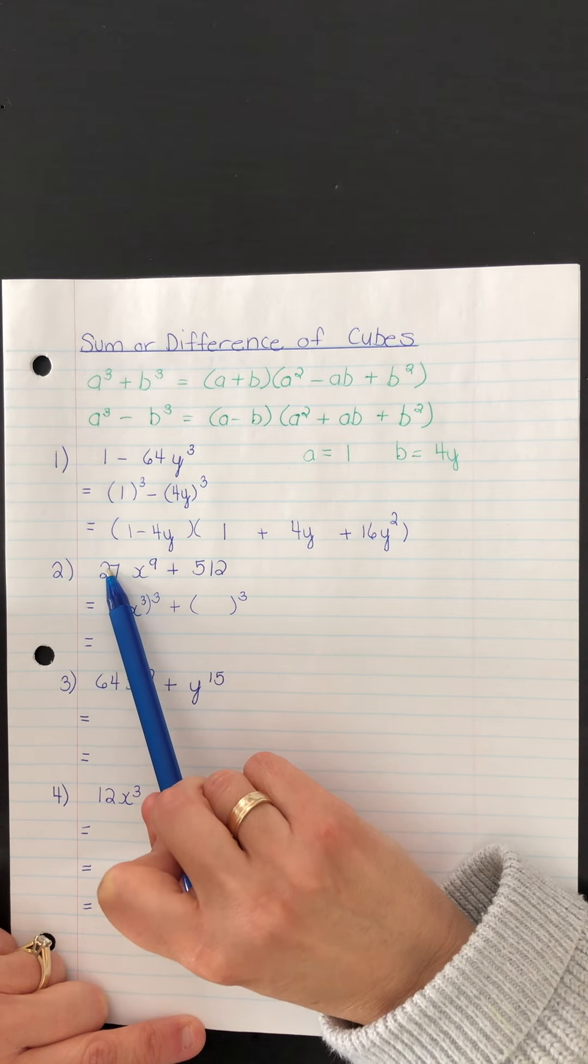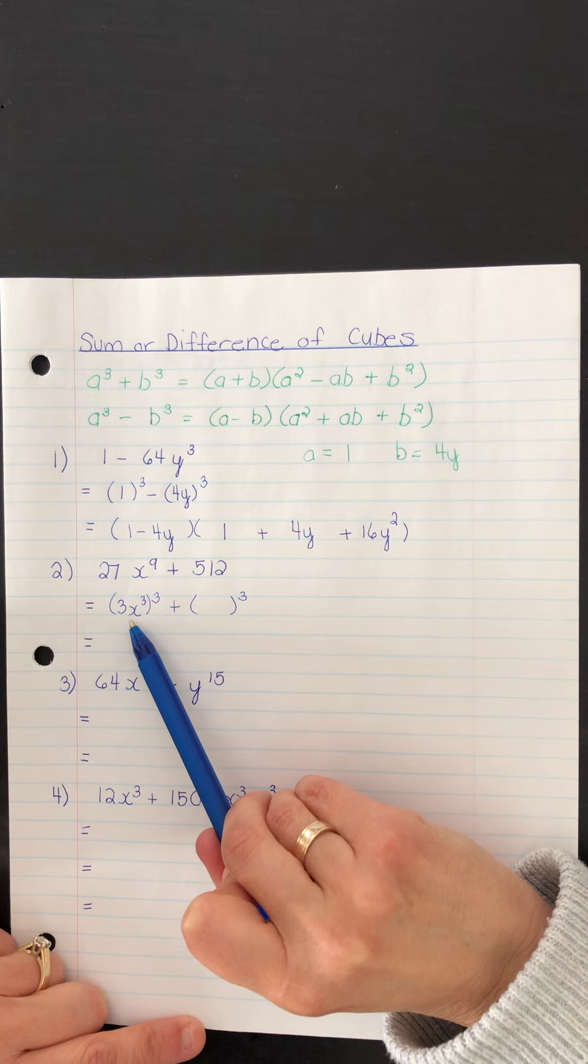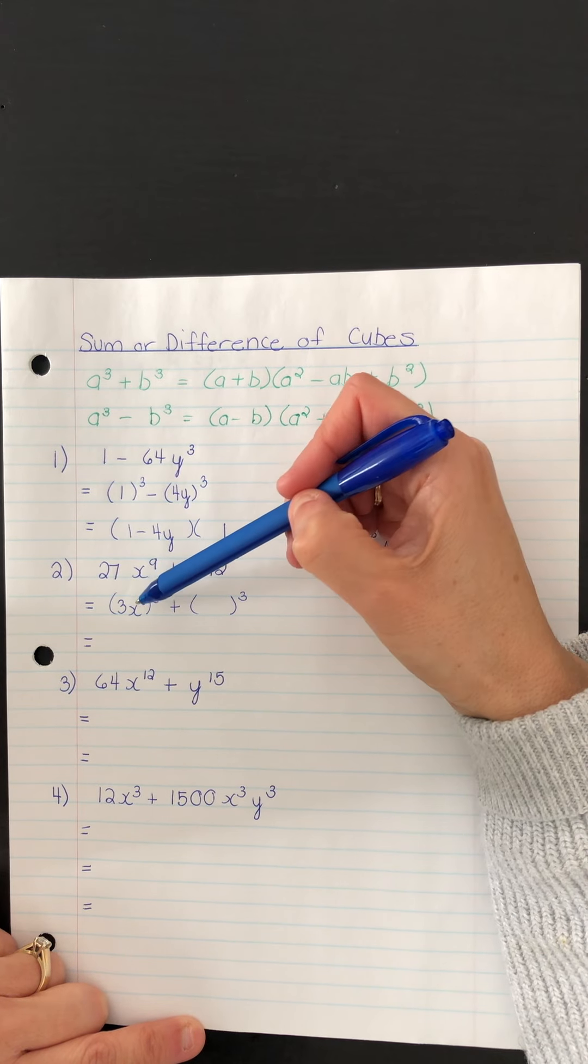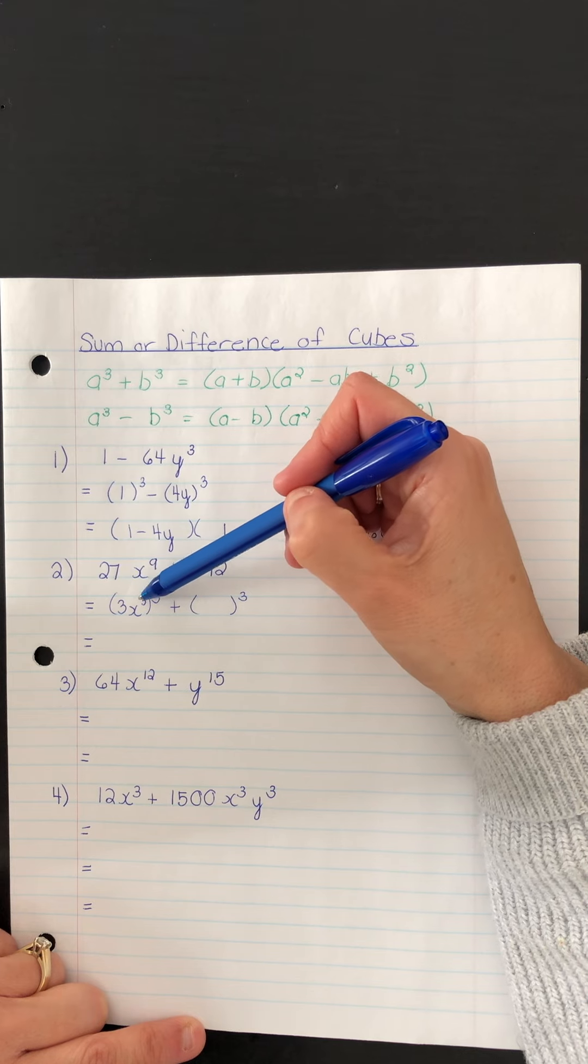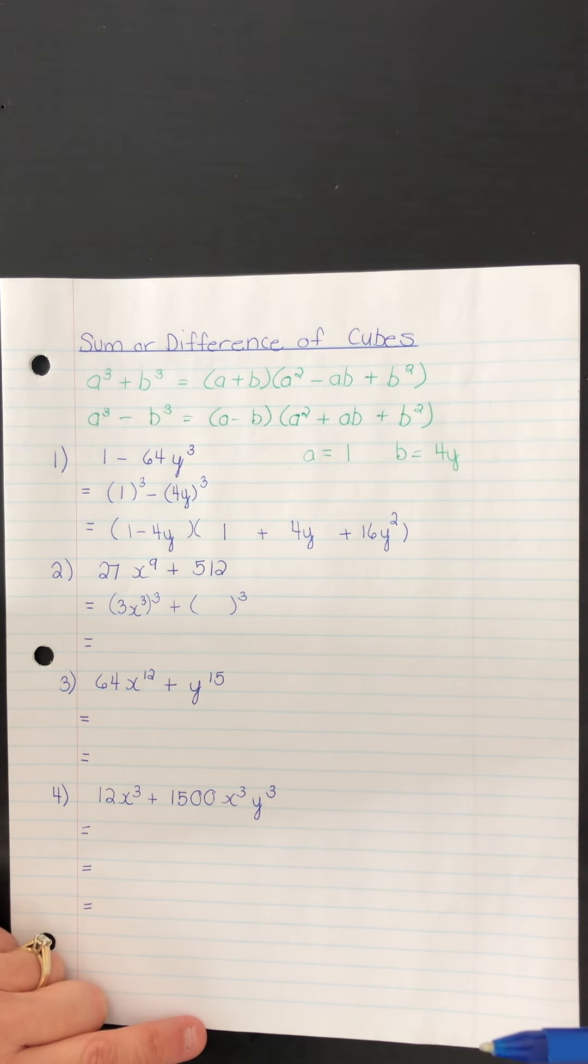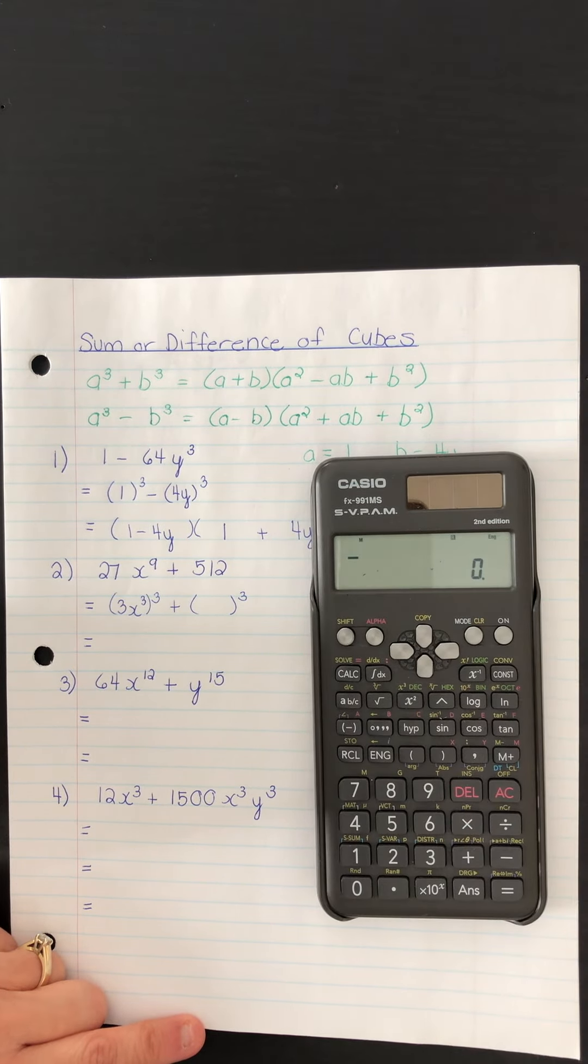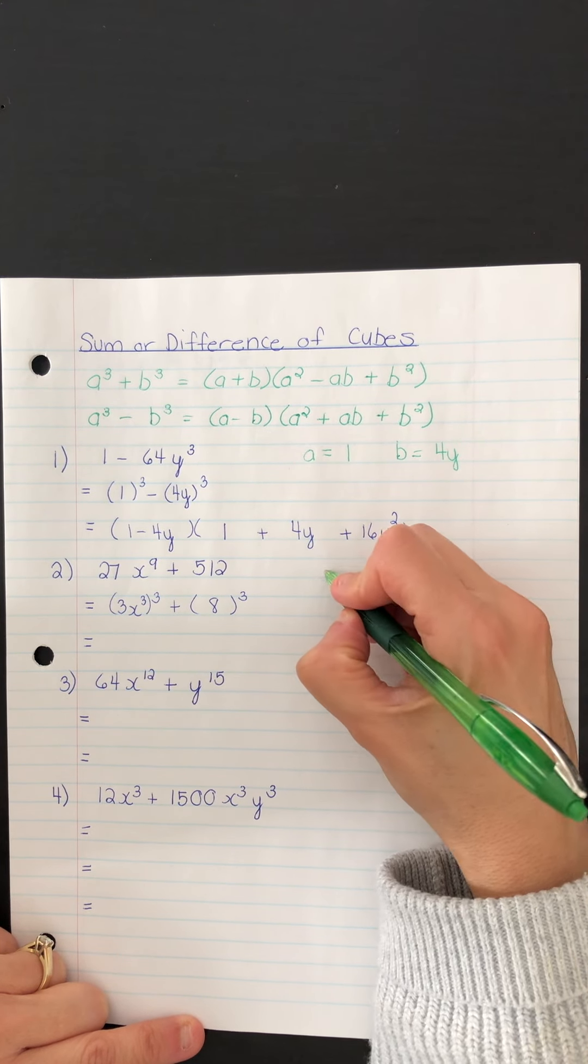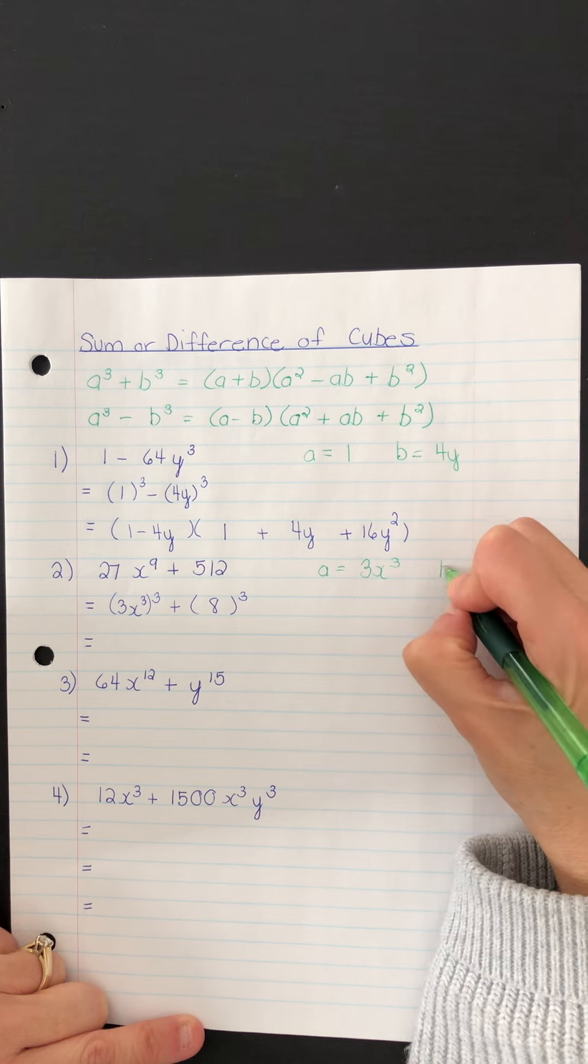You see, you have now 3 cubed, which is 27. And the laws of exponents would suggest here that when you cube x cubed, these exponents multiply. So we have 3 times 3, which is 9. Now the cube root of 512 is 8. If you ever aren't sure, you can use the cube root function here on your calculator. So here we put 8. And so what does that mean? A is 3x cubed and B is 8.